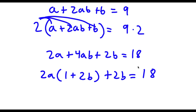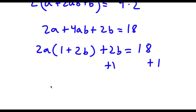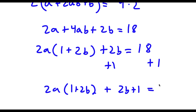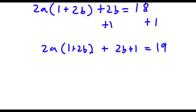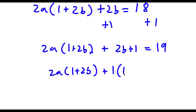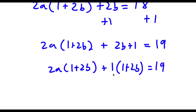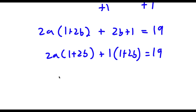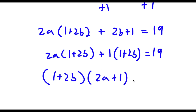Now I'm going to go ahead and add 1 on both sides. So now I have 2a times (1 + 2b) + 2b + 1 is equal to 18 + 1, which is 19. Now 2b + 1, we can rewrite as 1 times (1 + 2b). So if I factor out (1 + 2b), I get (1 + 2b) times (2a + 1), and this is equal to 19.